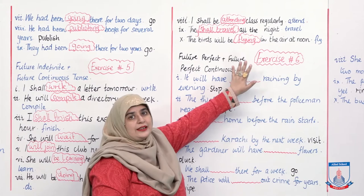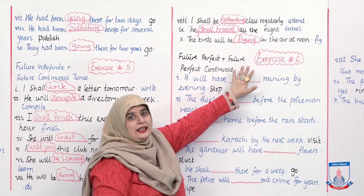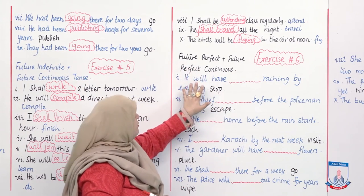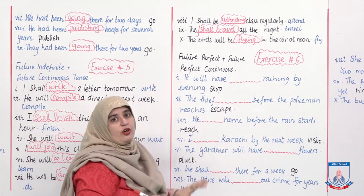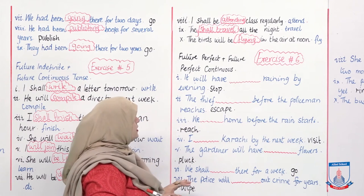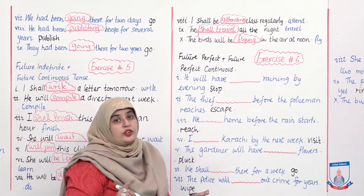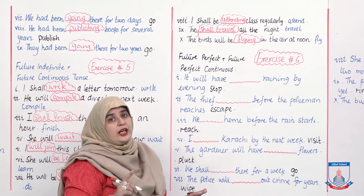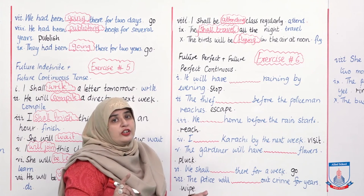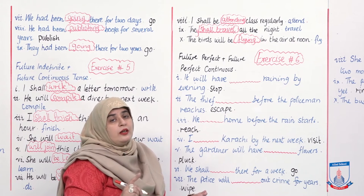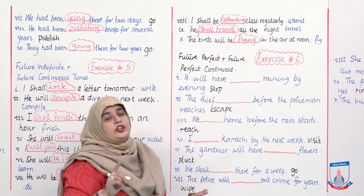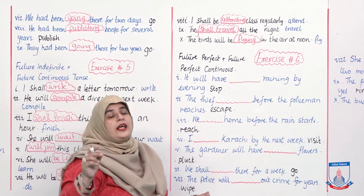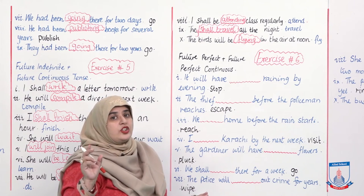We now move on to Exercise 6, which is about future perfect and future perfect continuous tense. Future perfect ki kya identity hogi? 'Will have' or 'shall have.' Aur jo verb laga hoga — uske end mein ING hoga for future perfect continuous.